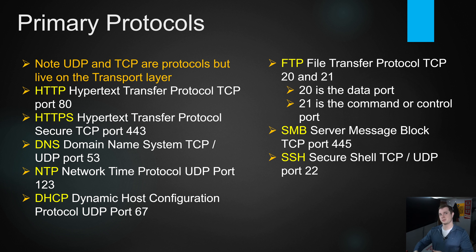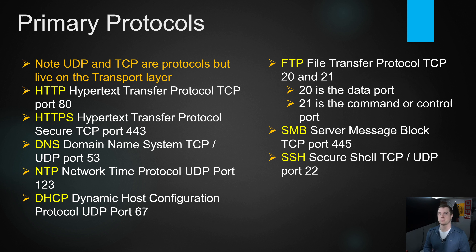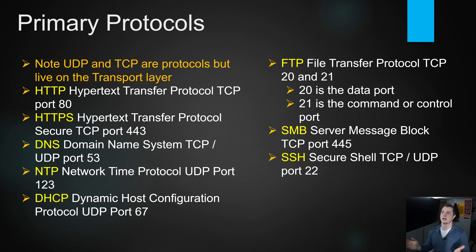DNS — domain name system — resolves networking names to IP addresses. If one of my servers is named 'admin server' and I ping it by name, the DNS server takes that name, compares it, and resolves it to an IP address. This is exactly what happens with internet addresses — when you go to amazon.com, that domain doesn't actually have an IP by itself; a DNS server somewhere resolves amazon.com to an IP address.